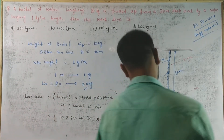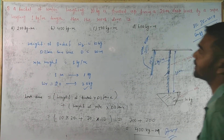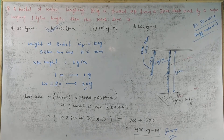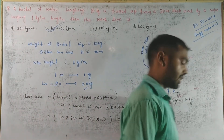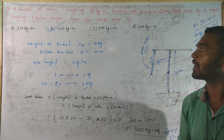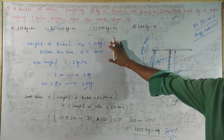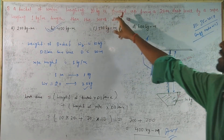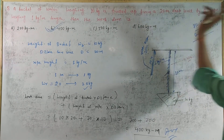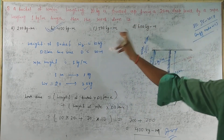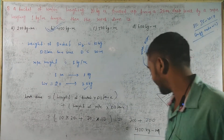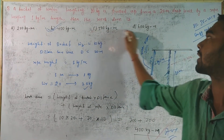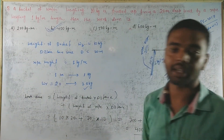So the answer is option B — 400 kg·meter. The question was: a bucket of water weighing 10 kg pulled up from a 20 meter deep well by a rope weighing 1 kg per meter length — work done = 400 kg·m. Option B is correct. Thanks, that was our question.